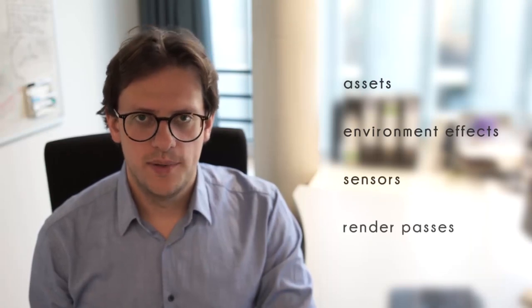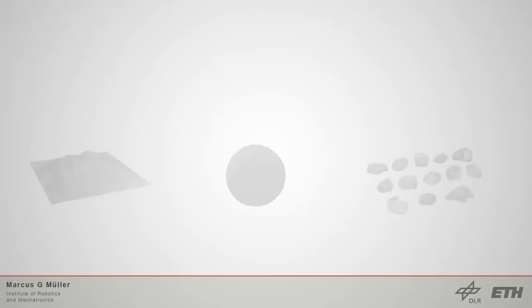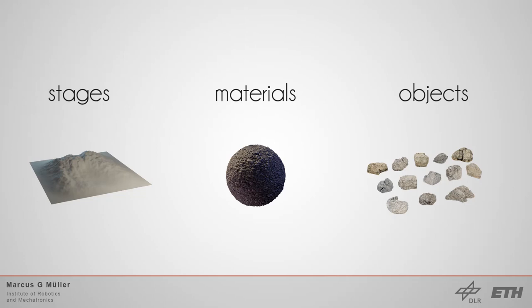We will have a closer look into the assets, environment effects, sensors and the render passes. There are three types of assets. Stages which serve as the fundamental landscape mesh. Materials which will be applied onto the stage. And last objects which will be placed on the stage. So, for instance, a material might be your terrain texture. And as an object, it might be rocks or trees.